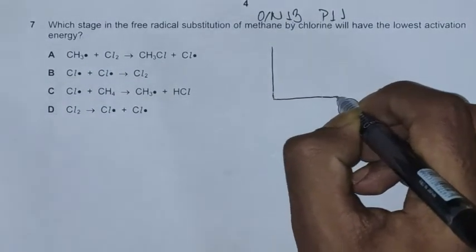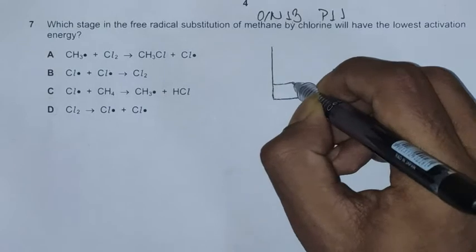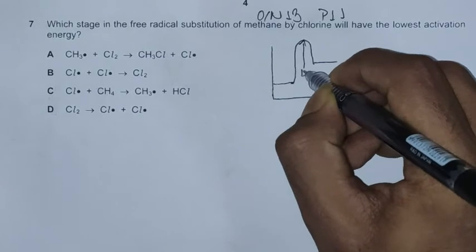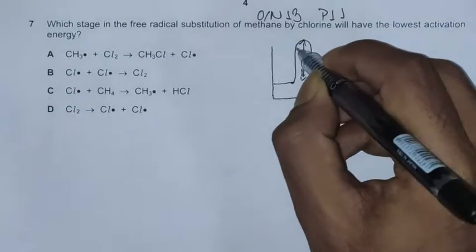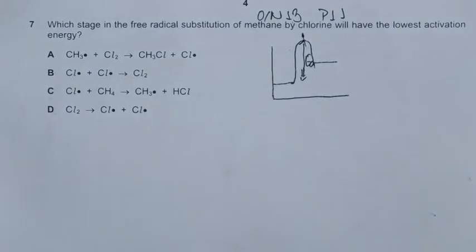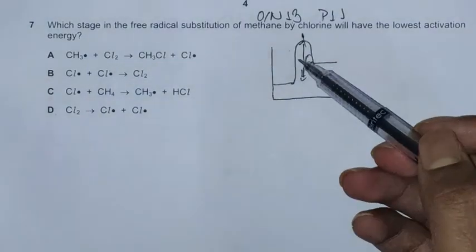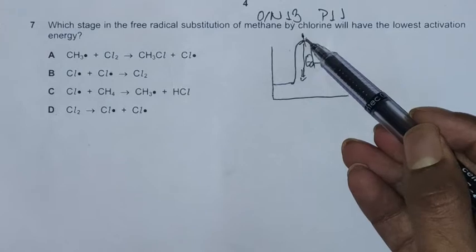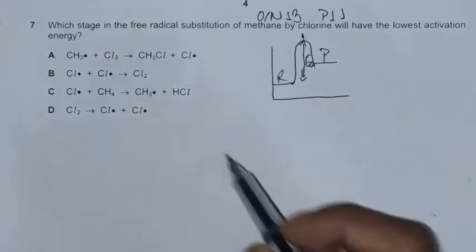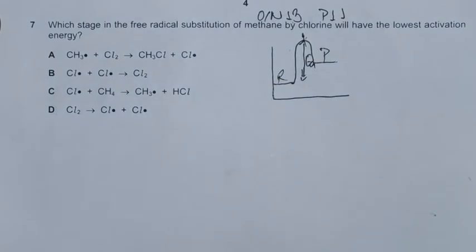If we look at the energy diagram for an endothermic reaction, the diagram is mostly like this, and this is the activation energy. We need to cross this barrier. Once this barrier is crossed, the reactants can form the products. Free radicals are very reactive and vulnerable to attack.